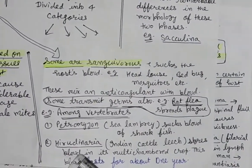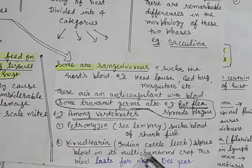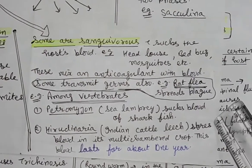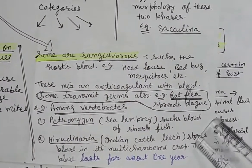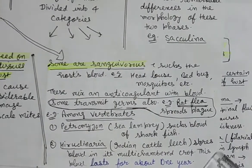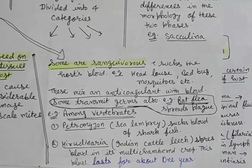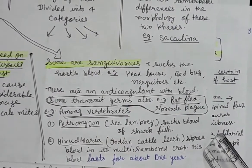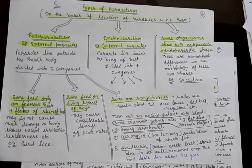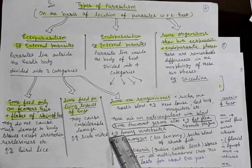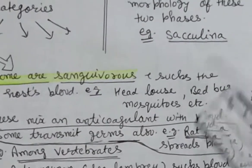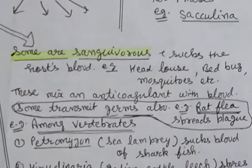The next example is Hirudinaria, which is the Indian cattle leech. It has a multi-chambered crop inside its body where it stores blood after sucking it, and it can use this stored blood for about one year for its survival. Additionally, there are some parasites which also transmit germs — for example, rat flea, which spreads plague. So while sucking blood, some parasites also spread germs. This is all about ectoparasitism.